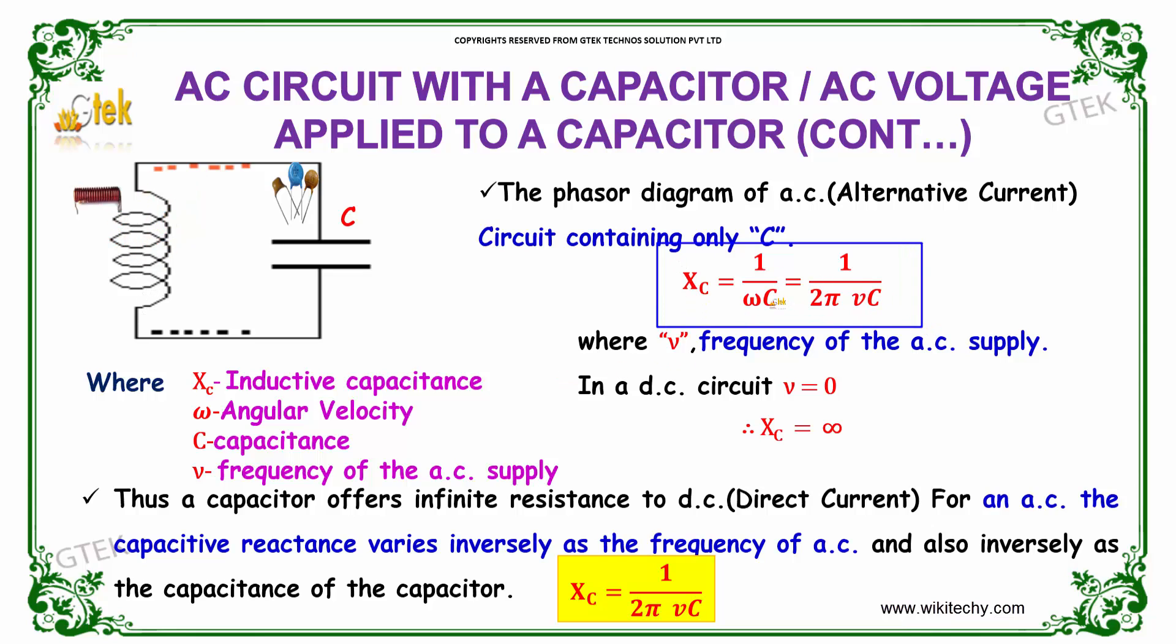Xc, the capacitive reactance, is equal to 1 by ωC equals 1 by 2πνC, where ν is the frequency of the AC supply. In a DC circuit, ν equals 0, which indicates Xc becomes infinity.